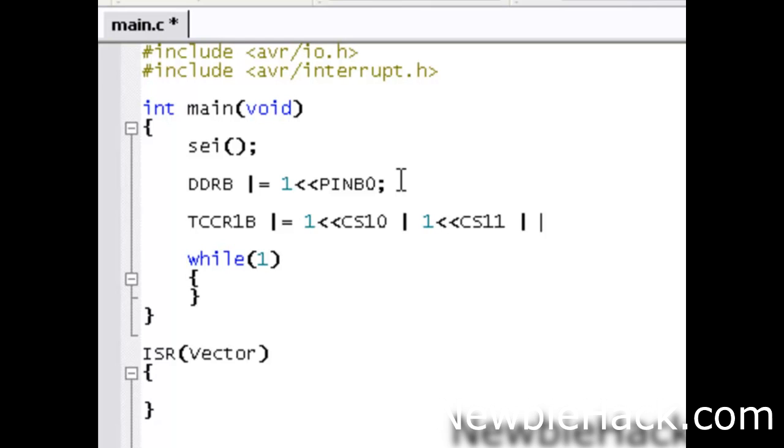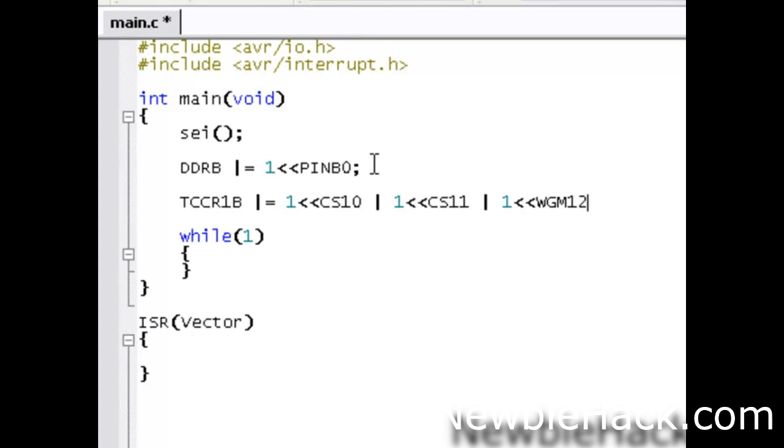And then, we're going to put a 1 in our waveform generation mode. The 1 represents the 16-bit, and the 2 just represents that there are more than 1 waveform generation mode switches. There's actually, I think, 3 of them.